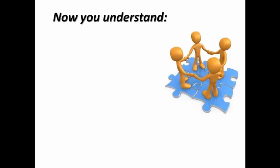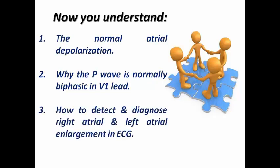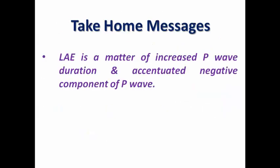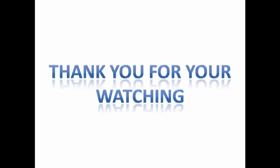To conclude this lecture, we have understood normal atrial depolarization, why the P wave is normally biphasic in V1, and how to detect right, left, and biatrial enlargement on ECG, as well as the concept of the Himalayan P wave. The key take-home message: left atrial enlargement involves increased P wave duration and an accentuated negative component, whereas right atrial enlargement involves increased P wave amplitude — not duration. Thank you.